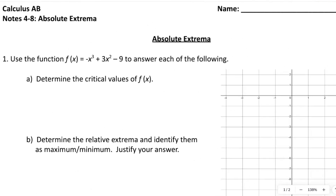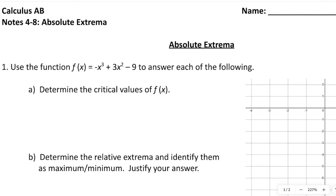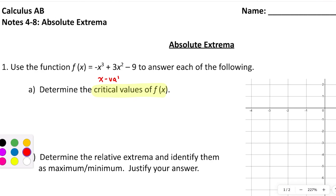There are just two problems on these notes. I want you to understand the difference between a relative maximum and an absolute maximum. So with this function, part A says determine the critical values of f of x. What are the critical values? Those are the zeros of the derivative — the x values where the first derivative equals zero.